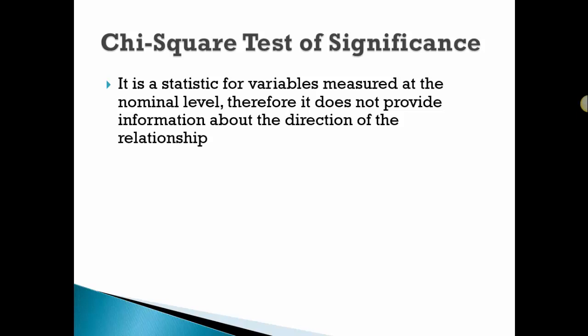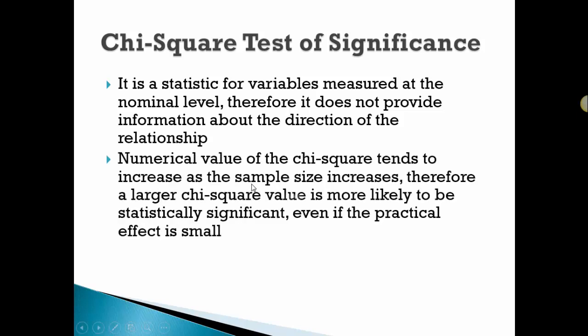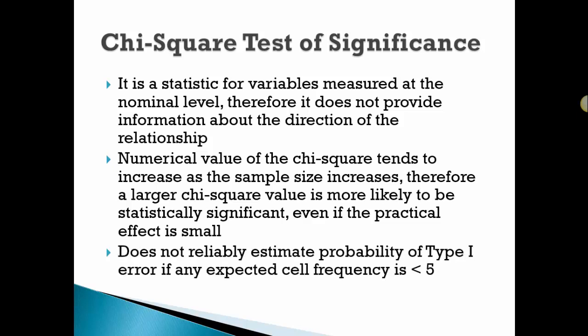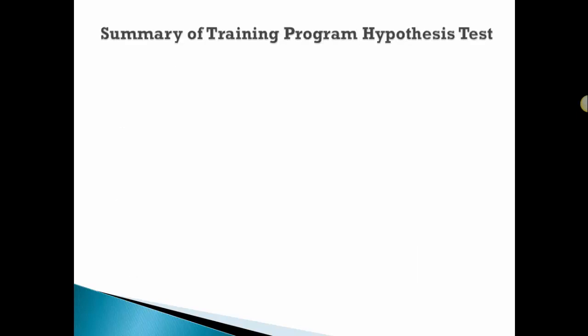The chi-square statistic is for variables measured at the nominal level. It doesn't tell us anything about the direction of the relationship. The numerical value of the chi-square tends to increase as the sample size increases. Therefore, a larger chi-square is more likely to be statistically significant, even if there isn't practical significance. It does not reliably estimate the probability of a Type I error if we have any expected cell counts less than 5.